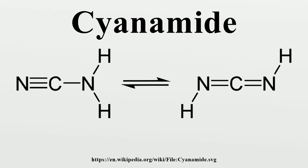Alcohols, thiols, and amines react analogously to give isoureas, pseudothioureas, and guanidines. The anti-ulcer drug cimetidine is generated using such reactivity.